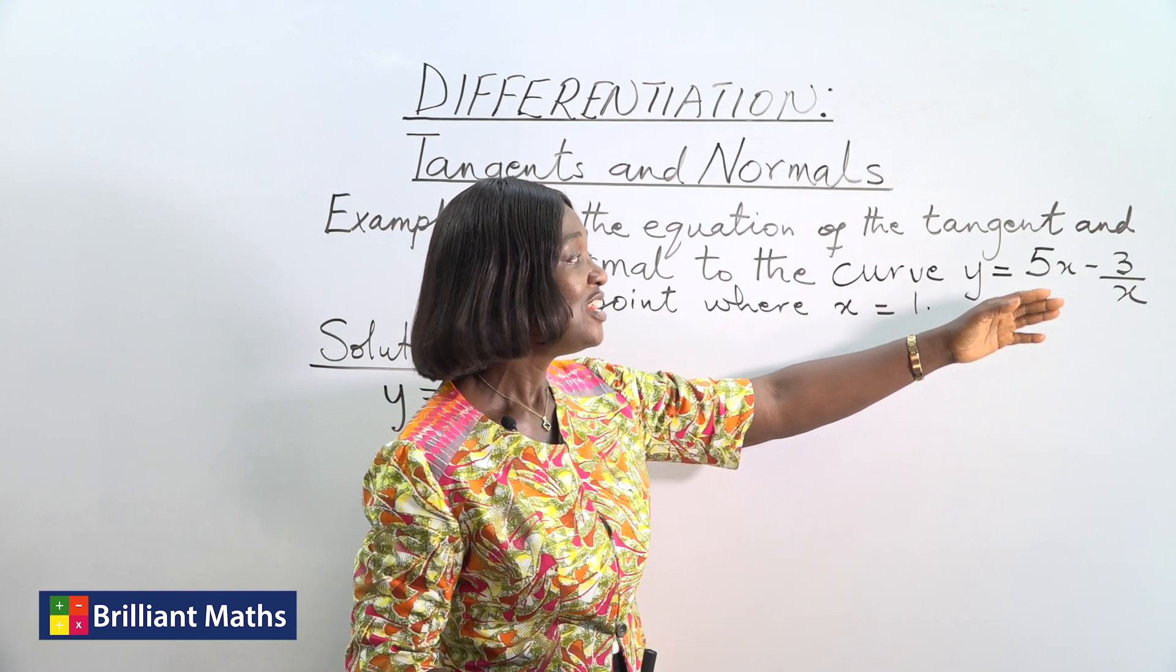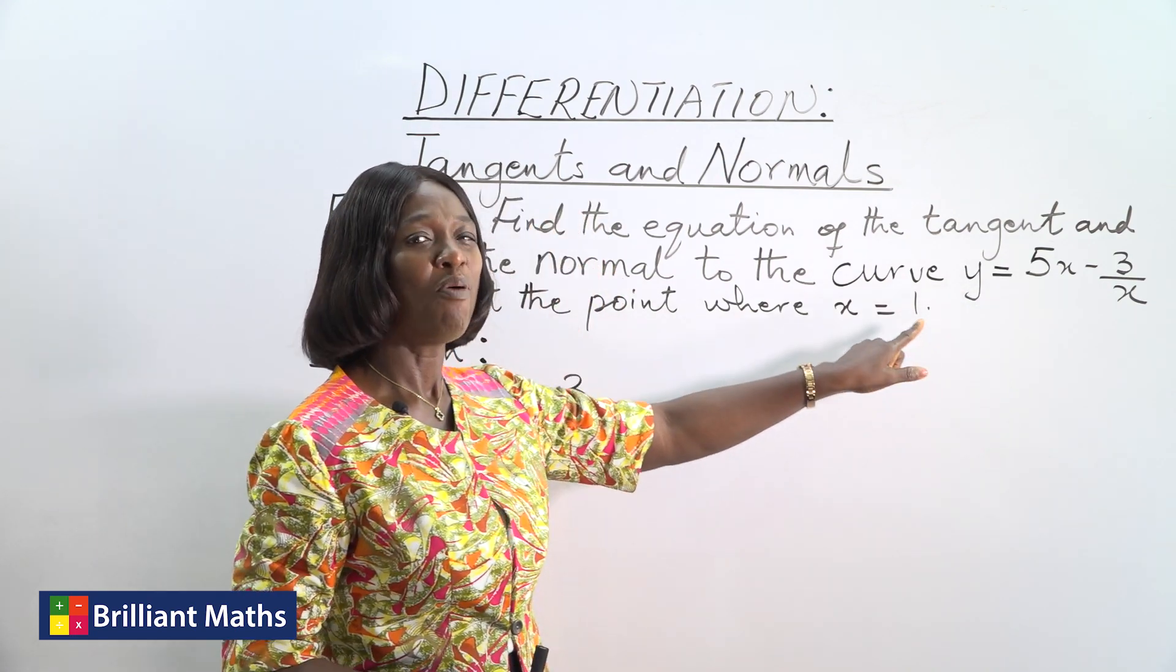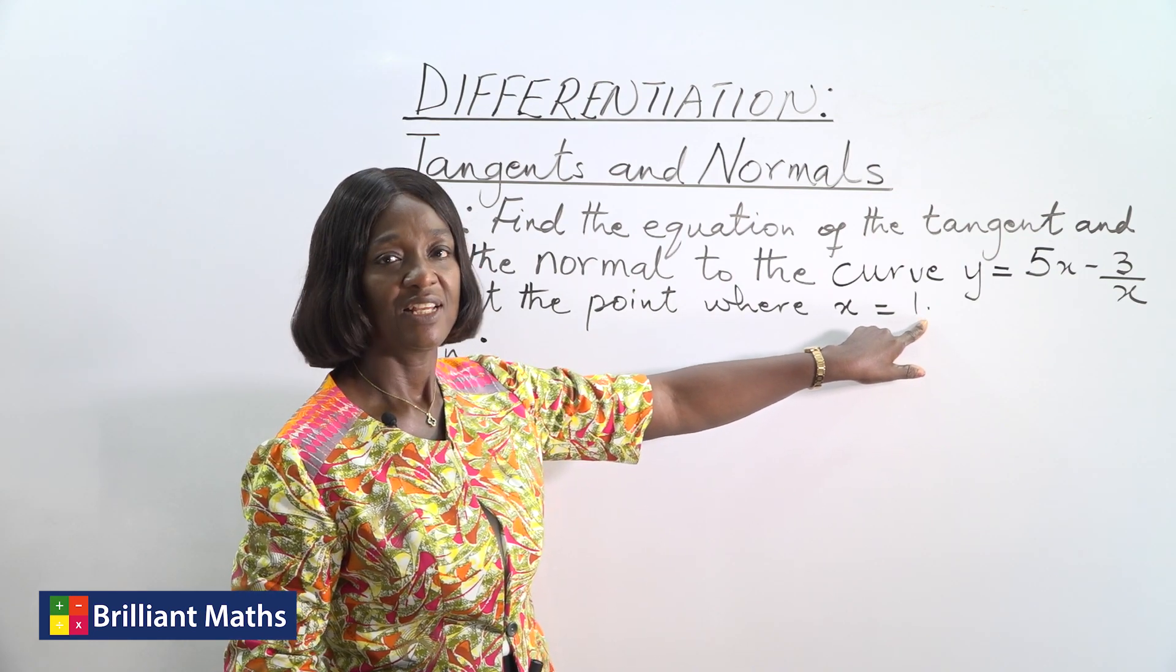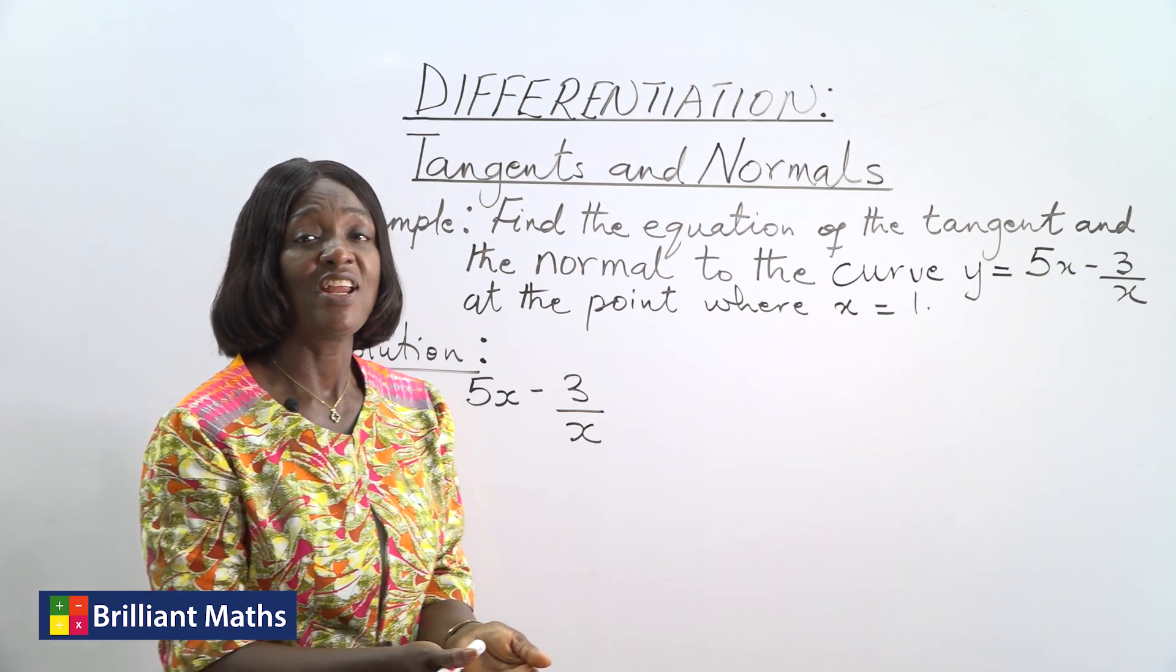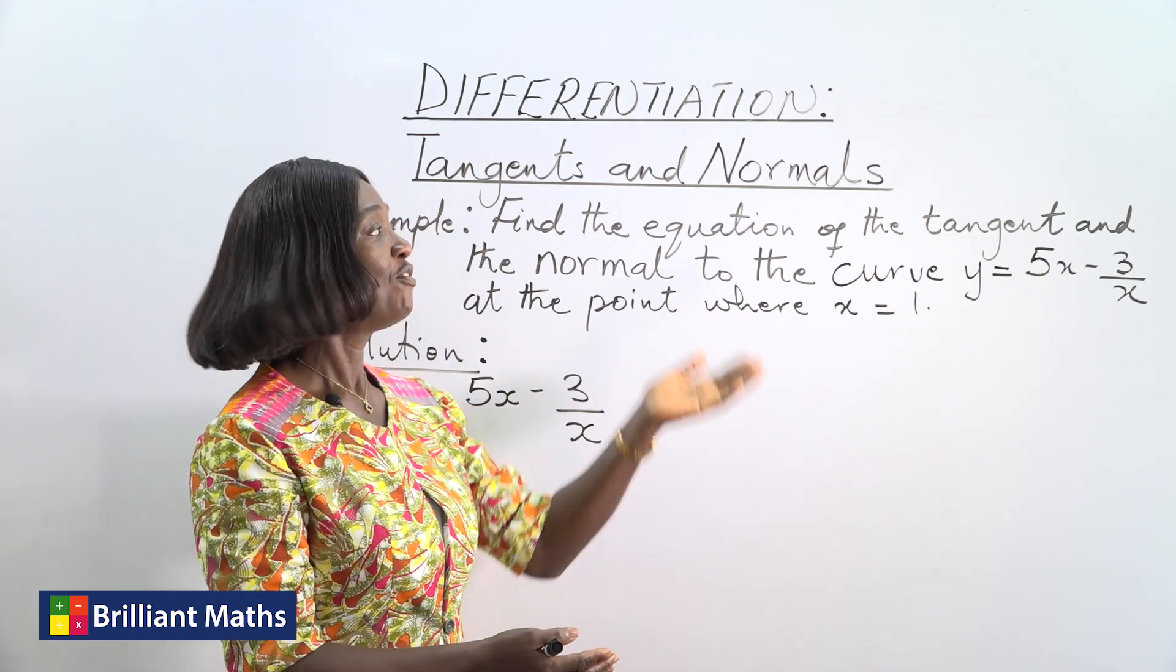And then, find the gradient at the point that's indicated. So when you find that gradient, you can use it to find the equation of the tangent.